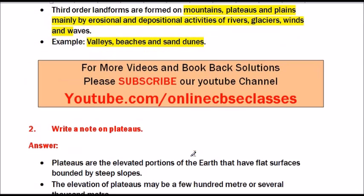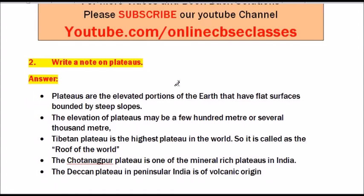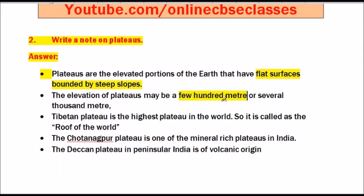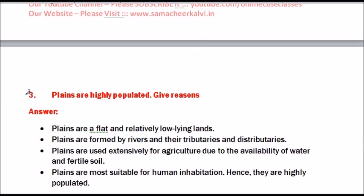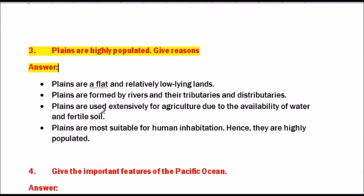Question number 2: Write a note on plateaus. Plateaus are elevated portions of the earth that have flat surfaces bounded by steep slopes. The elevation of a plateau may be a few hundred to several thousand meters. The Tibetan Plateau is the highest plateau in the world, so it is called the roof of the world. The Chota Nagpur Plateau is one of the mineral rich plateaus in India. The Deccan Plateau in Peninsular India is of volcanic origin. Question number 3: Plains are highly populated – give reason. Plains are flat and relatively low-lying lands formed by rivers and their tributaries and distributaries. They are used extensively for agriculture due to the availability of water and fertile soil, and are most suitable for human habitation. Hence, they are highly populated.